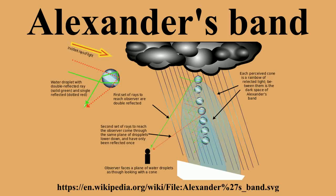Between the two bows lies an area of unlit sky referred to as Alexander's band. Light which is reflected by raindrops in this region of the sky cannot reach the observer, though it may contribute to a rainbow seen by another observer elsewhere.